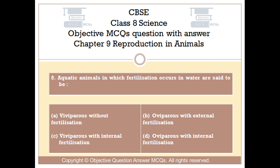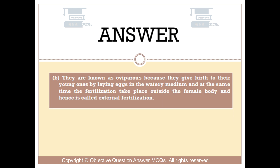The right answer is Option B. They are known as oviparous because they give birth to their young ones by laying eggs in the watery medium, and at the same time the fertilization takes place outside the female body and hence is called external fertilization.